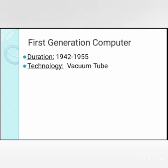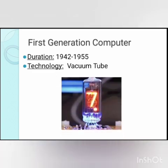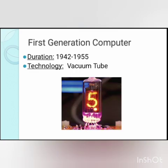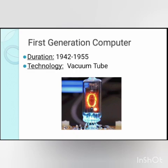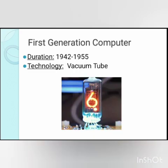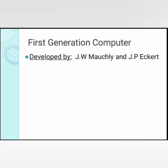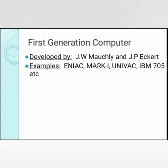There are five generations of computers. 1942 to 1955 is the period of first generation computers. These were bulky and needed many people to operate them. They contained numerous vacuum tube electronic devices that controlled the flow of electricity in a computer. These were very big in size, and weight was about 30 tons.